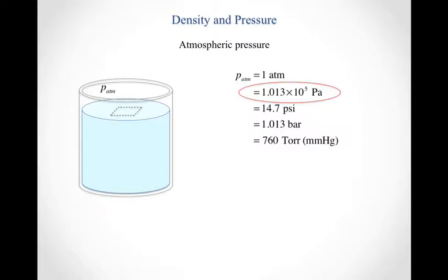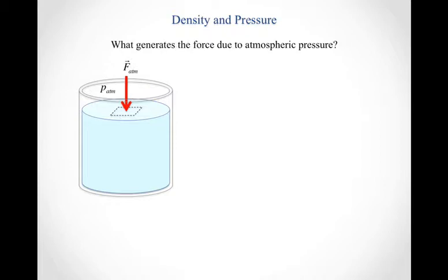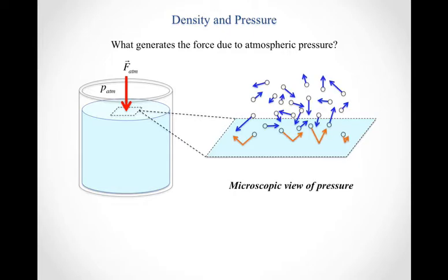So if we want to think about what's causing atmospheric pressure, we can think about some little piece of area here on the surface of our fluid. And so we know that there will be a force due to atmospheric pressure that's pushing down on that surface. The question becomes what generates that force? So this force due to atmospheric pressure, where does that come from? And so if we sort of blow up this little chunk of surface that we've got, well obviously there are air molecules that are running around.